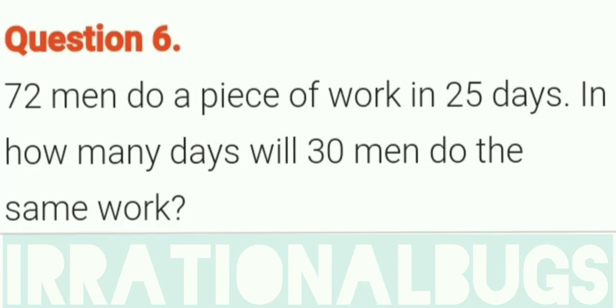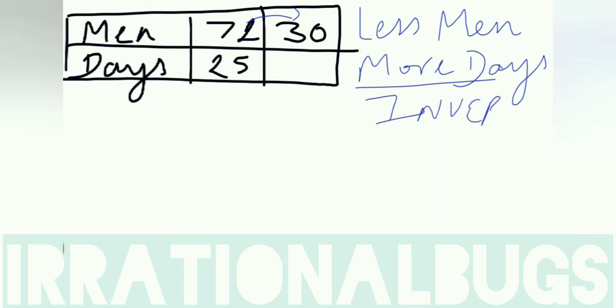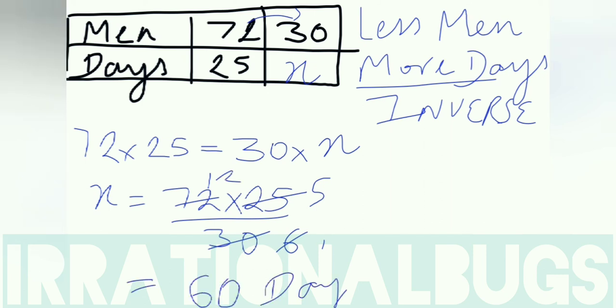Question number 6: 72 men do a piece of work in 25 days. In how many days will 30 men do the same work? Again 2 quantities - men and days. In this case, men 72 to 30, that means men decreased. If fewer men are working, then more days will be needed. Less men, more days. Less and more - again inverse. 72 into 25 is equals to 30 into x. So x is equals to 72 into 25 upon 30. Now 5 into 5 is 25, 5 six times 30. 6 twelve times 72. 12 into 5 is 60. So our answer is 60 days.